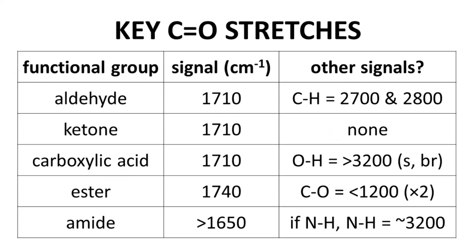Esters and amides are also distinctive. Esters often show a strong CO stretch in the range of 1200 or lower. You may even see two signals. Amides, if they have an NH, will show an NH stretch near 3200 wave numbers.